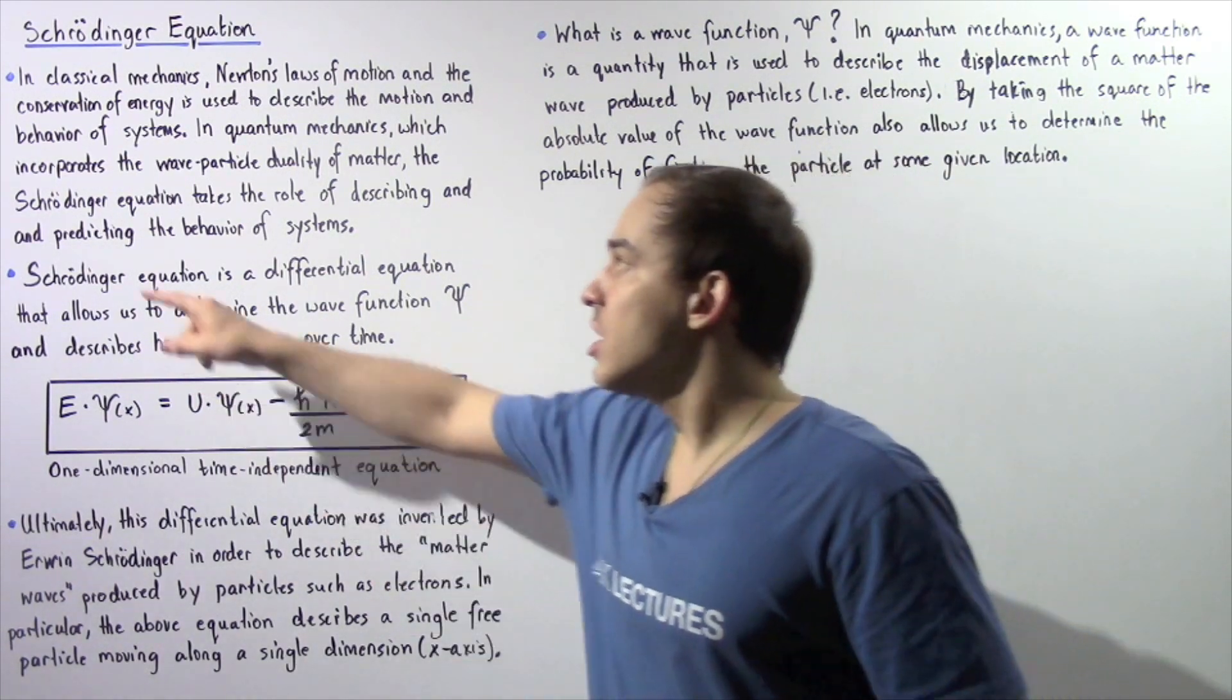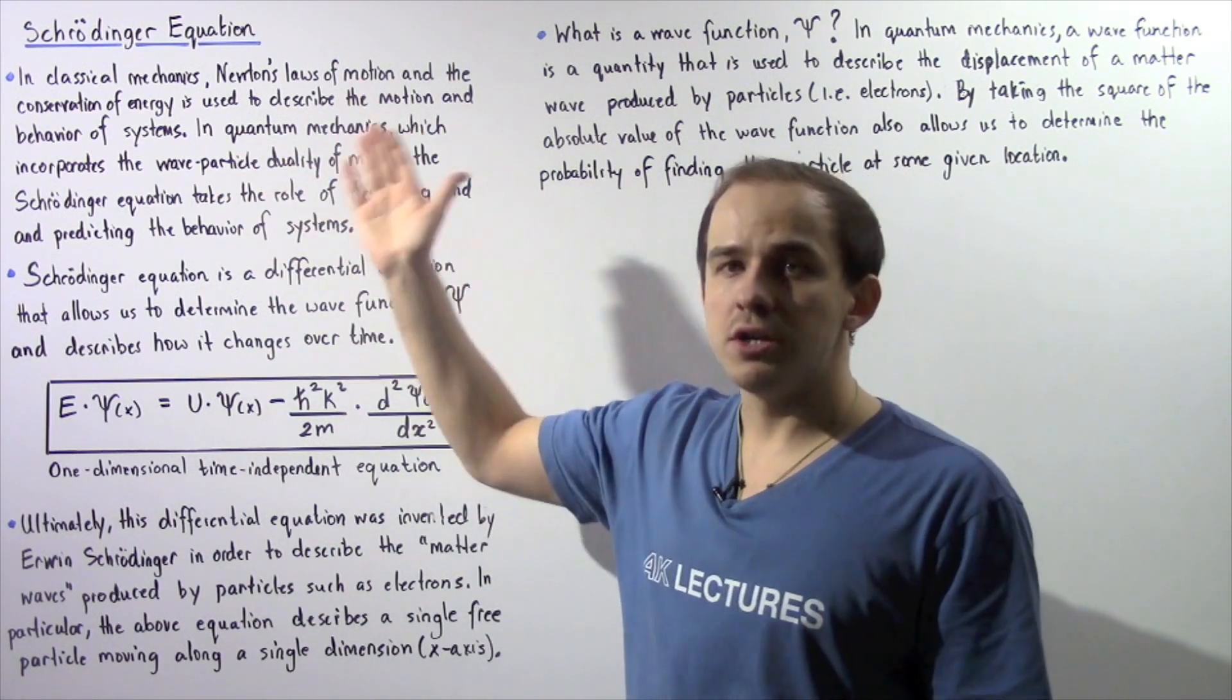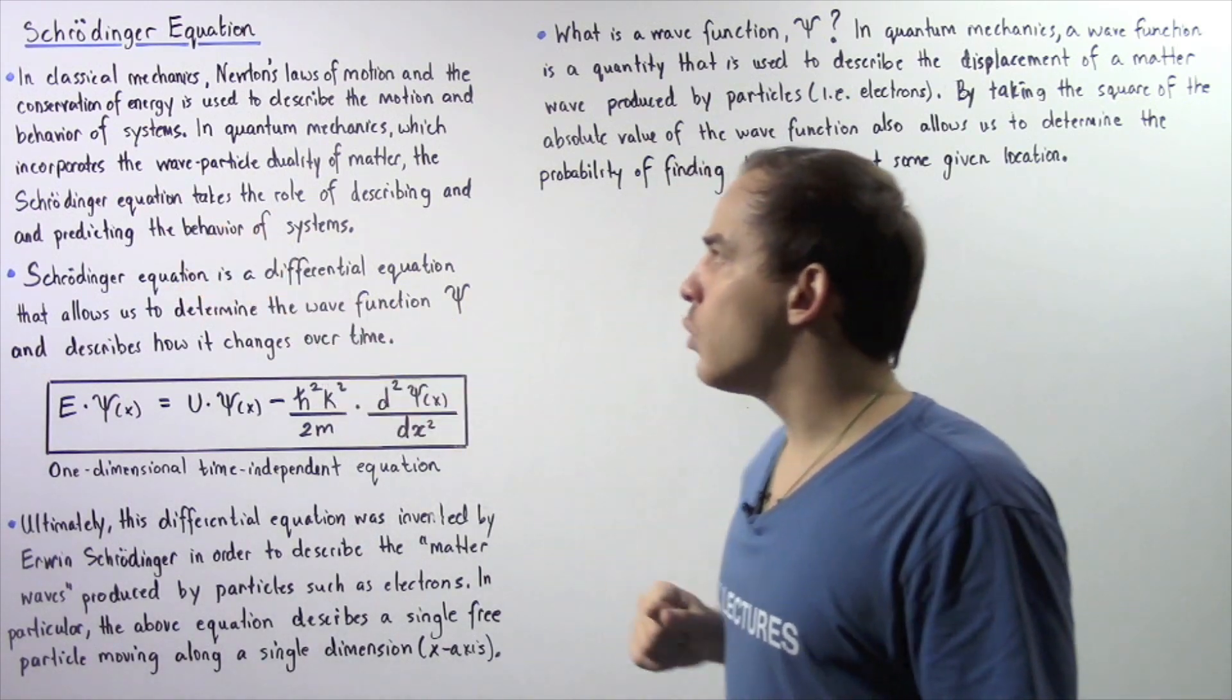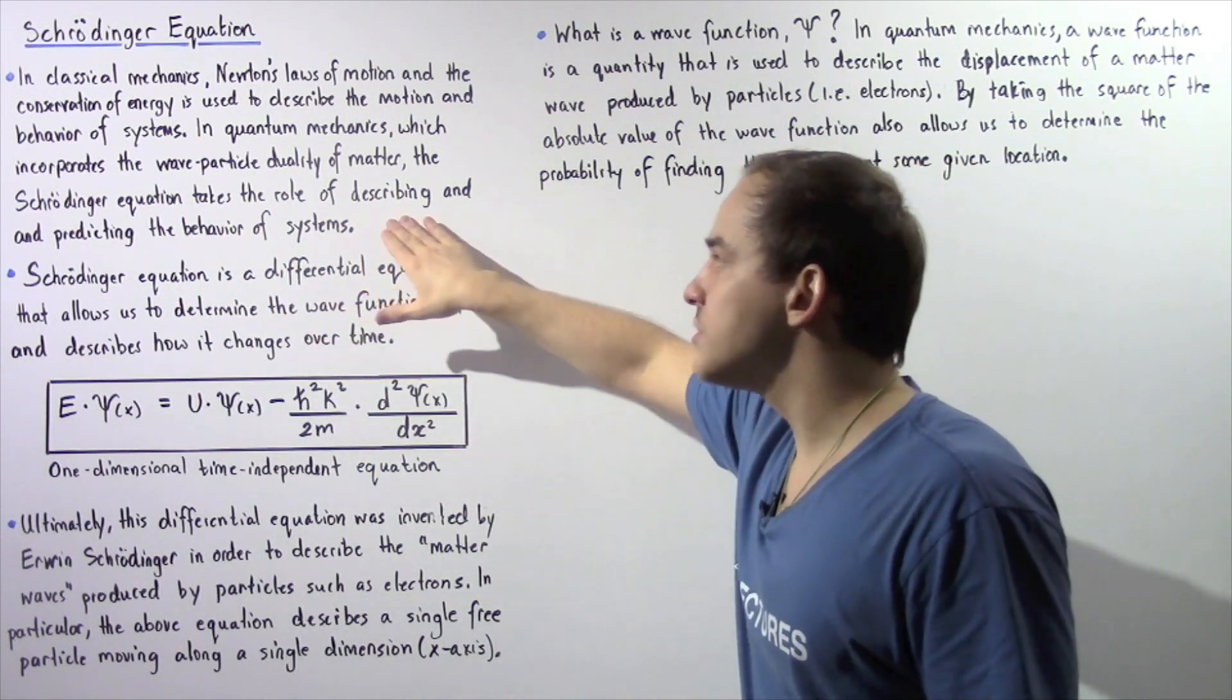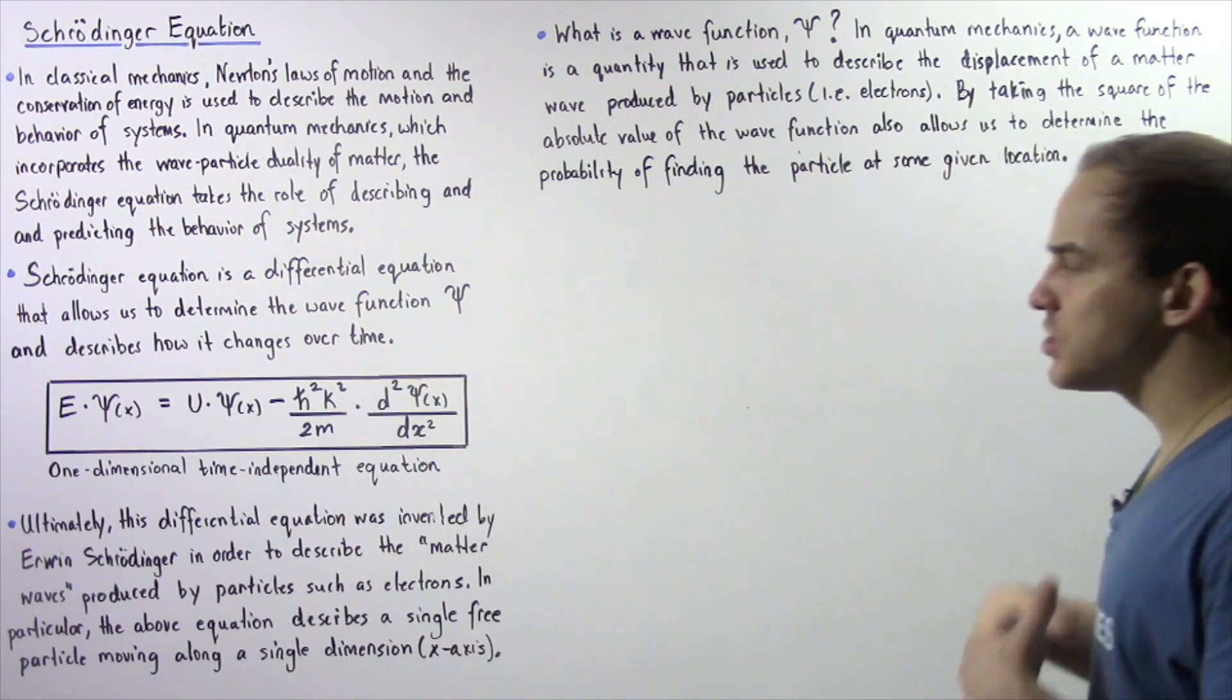And in quantum mechanics, the Schrödinger equation replaces Newton's laws of motion. So in quantum mechanics, Schrödinger equation takes the role of describing and predicting the behavior of our systems, the behavior of our electron.